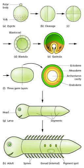Regional specification refers to the processes that create spatial pattern in a ball or sheet of initially similar cells. This generally involves the action of cytoplasmic determinants located within parts of the fertilized egg, and of inductive signals emitted from signaling centers in the embryo.